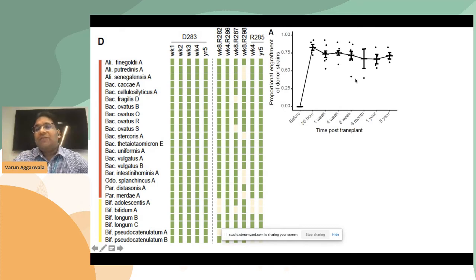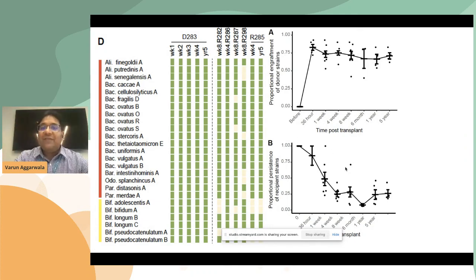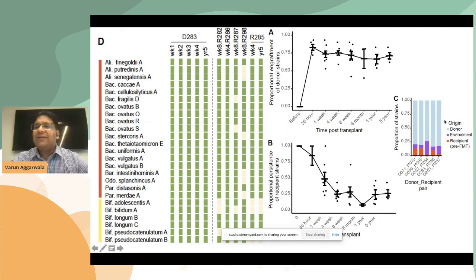What we find is that FMT results in a very stable, durable, almost semi-permanent alteration of the recipient's microbiome. Almost 70% of donor strains are stably engrafted in the recipient even five years later. We also find that about 20% of recipient strains present prior to FMT significantly persist and are not displaced by donor strains even five years later. The majority of strains post-FMT are from the donor, some recipient strains persist, and some unique environmental strains are also present.